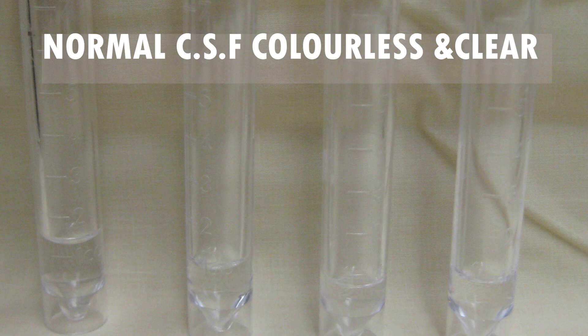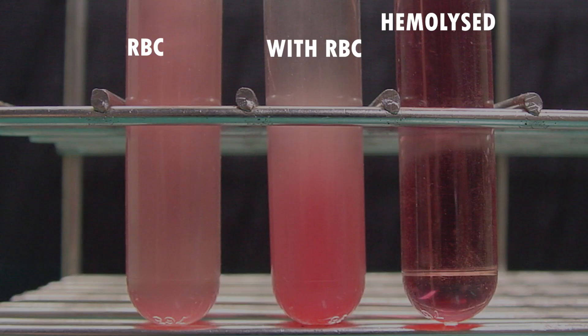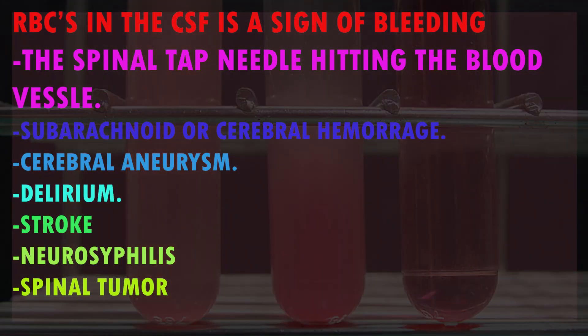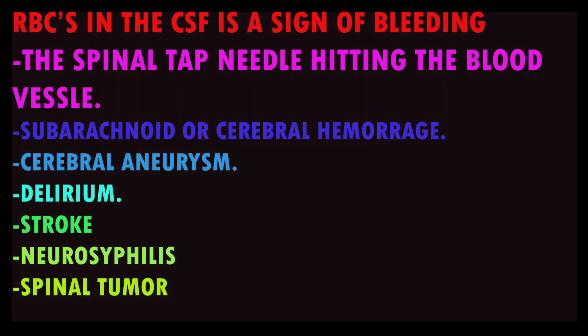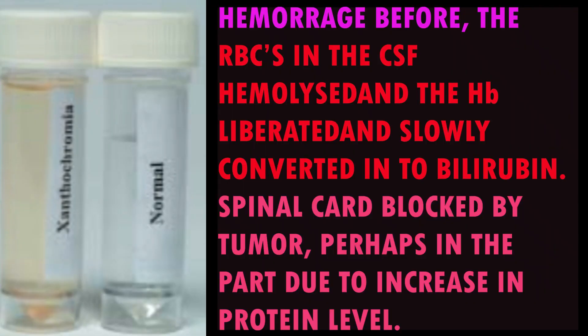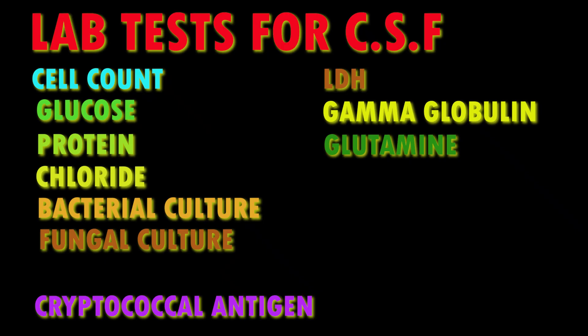The appearance and color: CSF is normally colorless like water. If red blood cells are present, the color may change from pink to red according to the number of RBCs and the percentage of lysed RBCs. Xanthochromia — a pale yellow color CSF — is seen with increased bilirubin due to conversion of lysed RBCs in subarachnoid hemorrhage conditions. Normally CSF is clear; it may become turbid when blood cells or bacteria or other microorganisms are present in increased numbers.